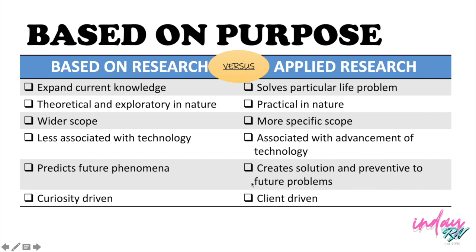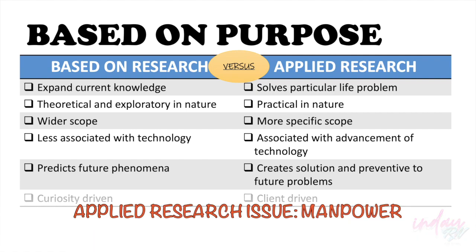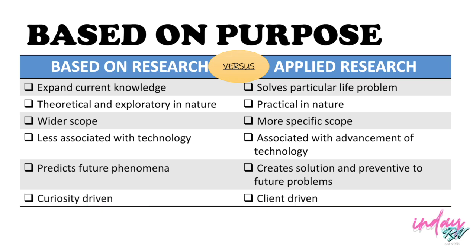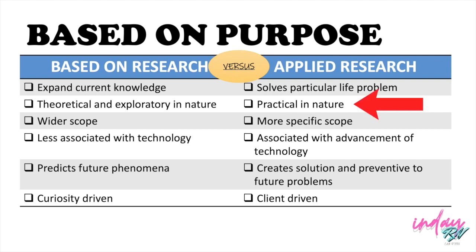What could be the possible solutions to solve a problem? For example, I have a manpower problem right now in my unit. What could be the solutions I'm going to do as a head nurse or nursing leader in order to have a solution for manpower issues? The next difference is that here in based research, it is theoretical and exploratory in nature — you are just looking for things related through literature review to support your research. However, there is no solution to be done; it's just in theory. Meanwhile, here in applied research, it is already practical in nature because you are thinking of a solution to solve your problem.